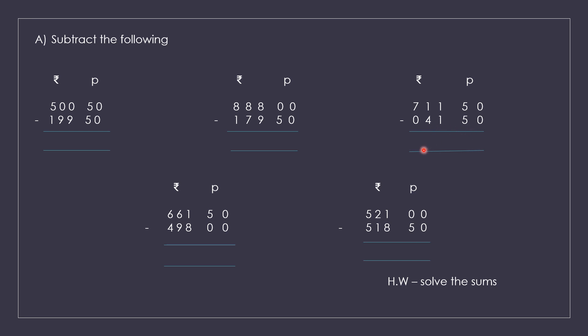661 rupees 50 paise minus 498 rupees 0 paise. Subtract the paise and the rupees and find out the correct answer.